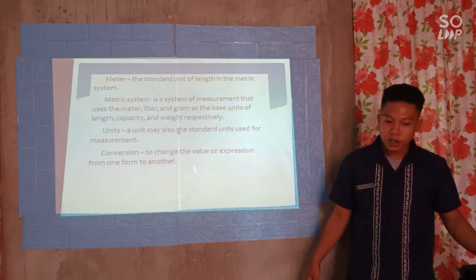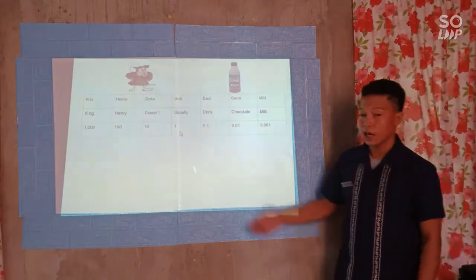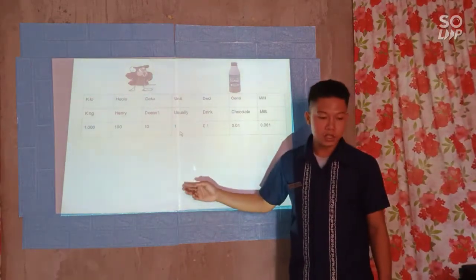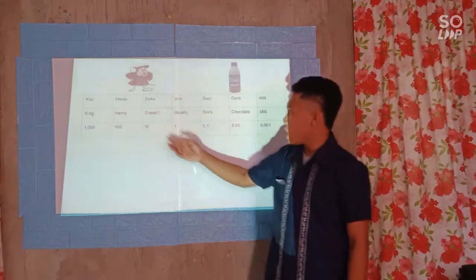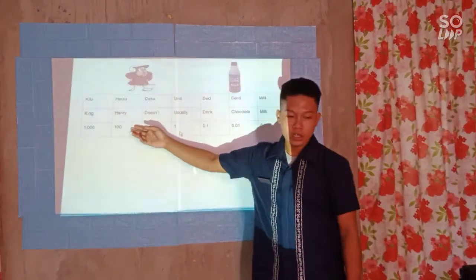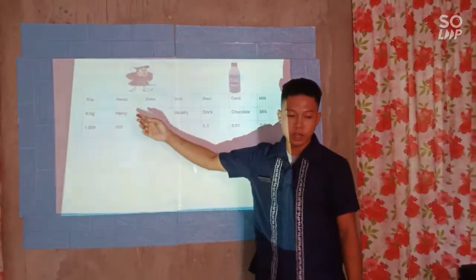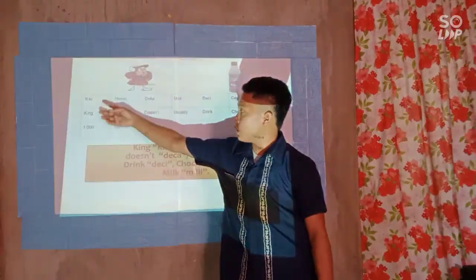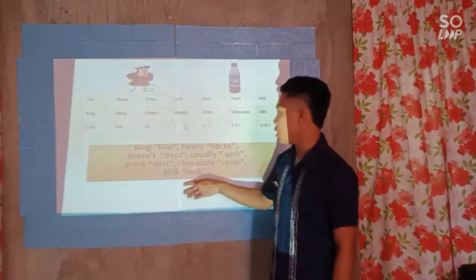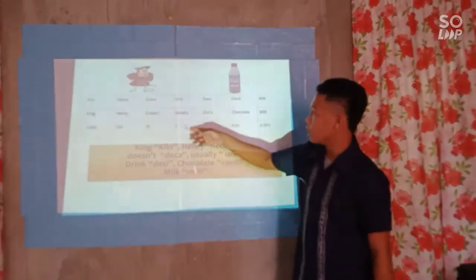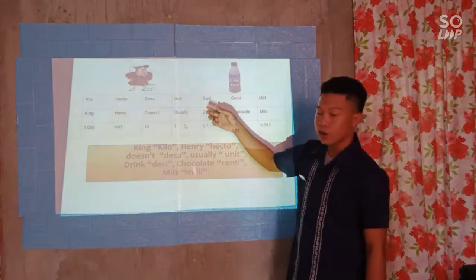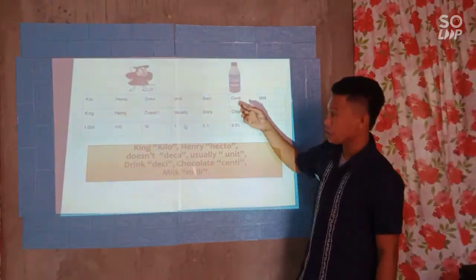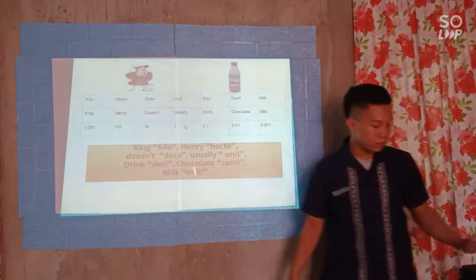I have here a chart. This chart helps you understand the metric system. In every word, it represents each unit: King for kilo, Henry for hecto, Dozen for deka, Usually for unit, Drink for deci, Chocolate for centi, and Milk for milli.